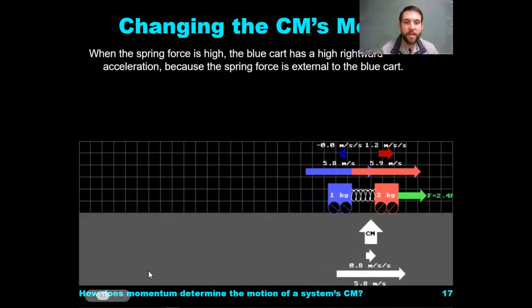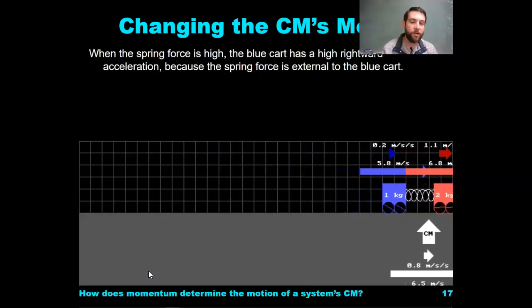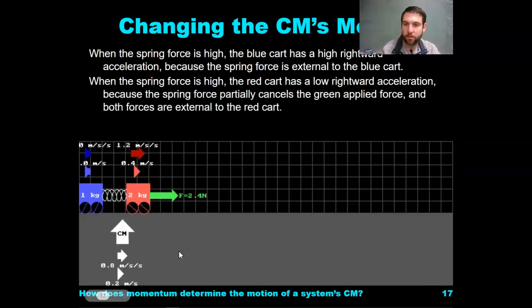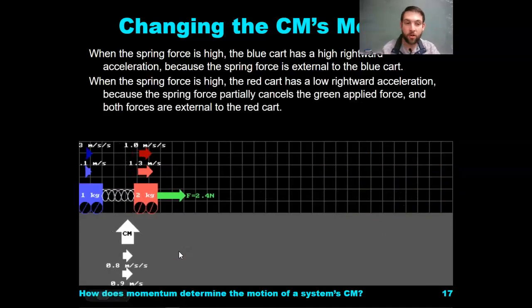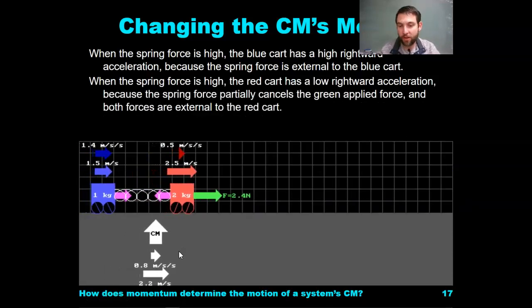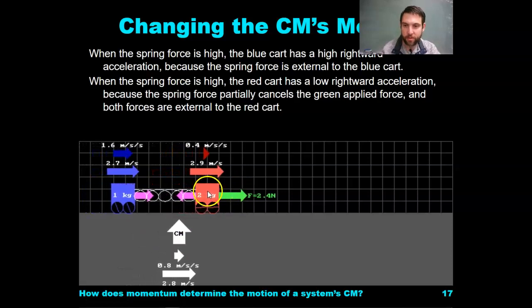When the spring force is high, the blue cart has a high rightward acceleration because the spring force is external to the blue cart. When the spring force is high, the red cart has a low rightward acceleration because the spring force partially cancels the green force applied, and both forces are external to the red cart.